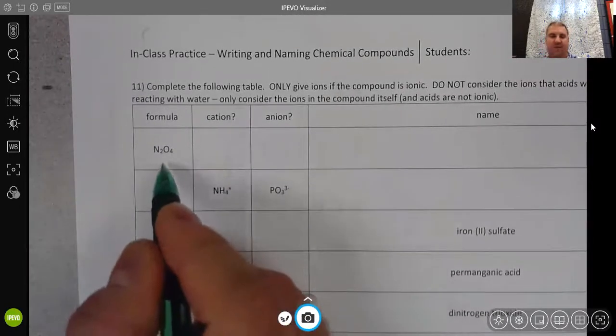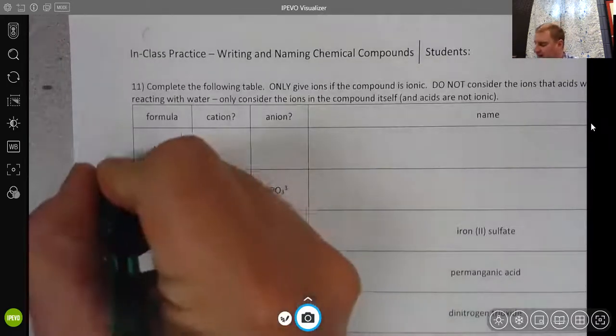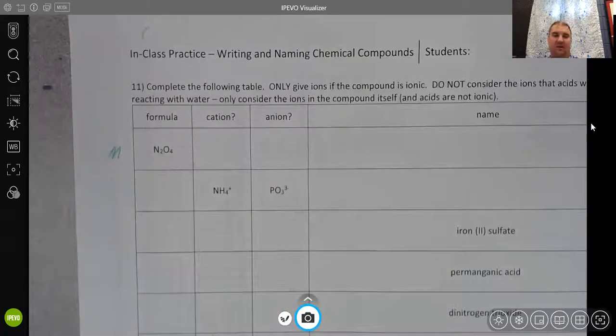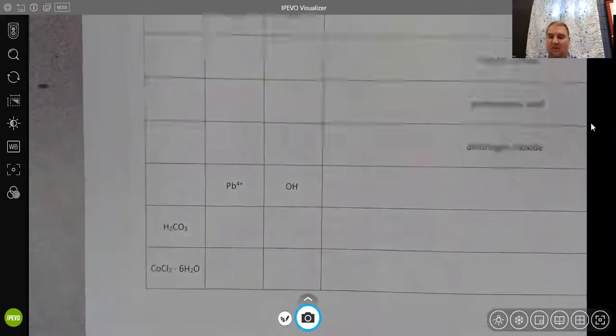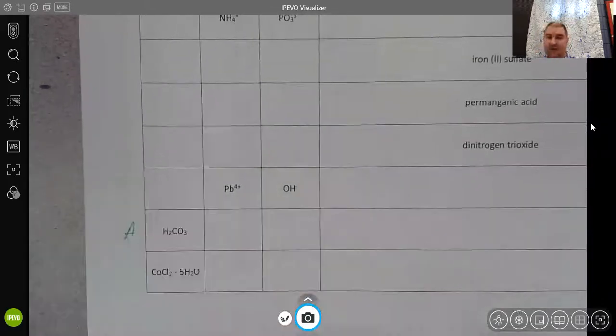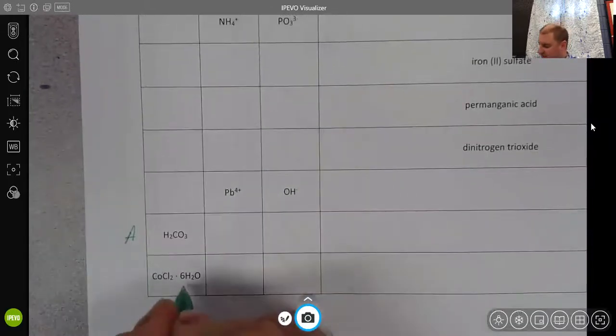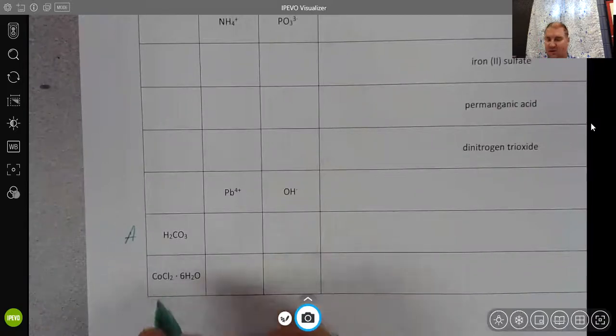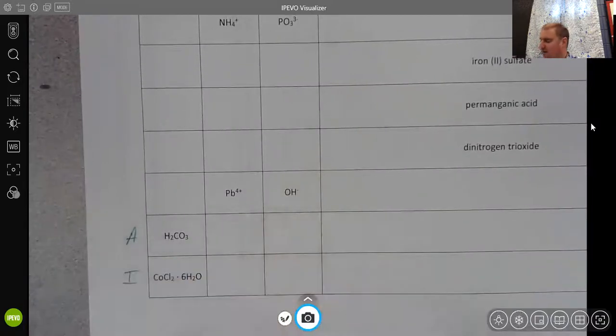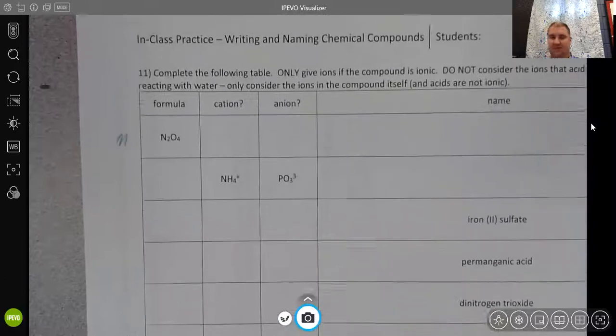The key really, if you just have the formula, is being able to identify when those are molecular compounds like that first one is, or an acid like this one is, or even a hydrate here. This is a hydrate, but the first part of this is ionic. And so we'll talk about those as we go through.